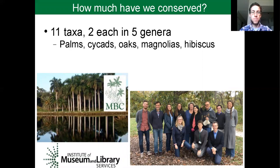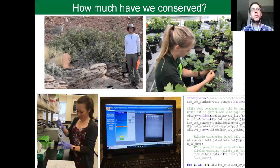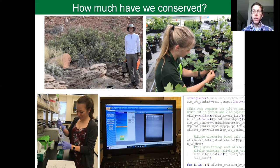The first project I'll tell you about is a recently completed project led by Dr. Patrick Griffith of the Montgomery Botanical Center and myself, funded by the Institute of Museum and Library Services in the U.S. We investigated how much genetic diversity has been conserved in botanic gardens of 11 taxa across five genera. To determine this, we go out into wild populations and get leaf tissue from as many plants as possible, then do the same in botanic gardens. We do DNA sequencing, visualize and analyze it computationally. Basically, we're comparing the genetic diversity in gardens to the total genetic diversity that exists in the wild.